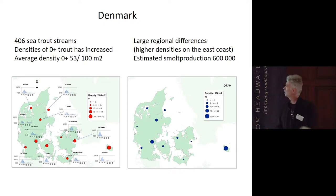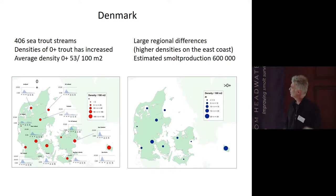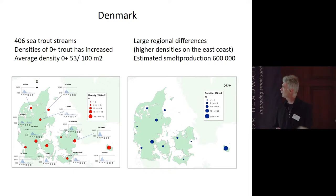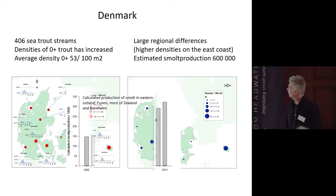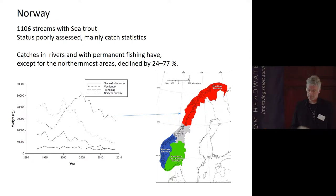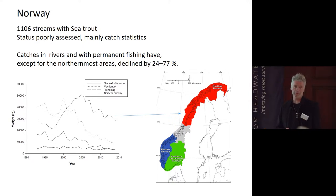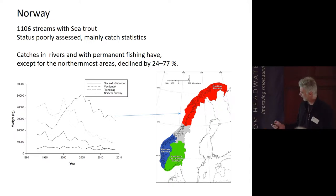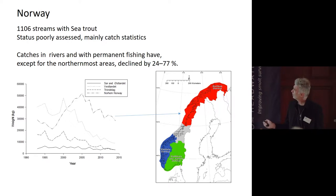In Denmark, there are approximately 400 sea trout streams, with densities of zero-plus trout increasing, though with larger regional differences. Overall smolt productivity is estimated at 600,000 smolts produced. Norway unfortunately has very little assessment going on, starting much later than Sweden. They have approximately 1,100 streams with sea trout, but their catches have really declined — in rivers with permanent fishing there has been a decline of almost three quarters in some areas, which is a big concern.